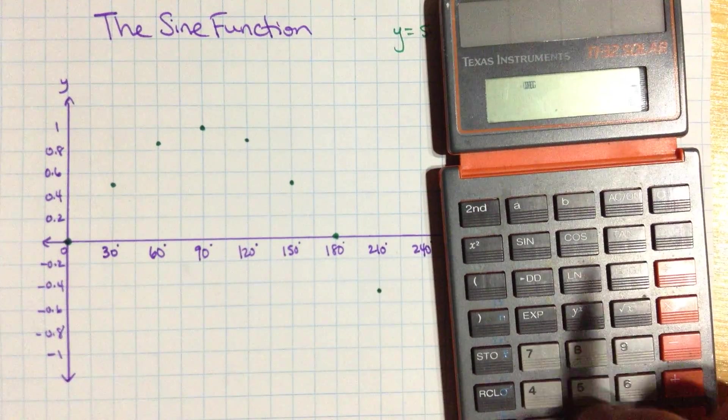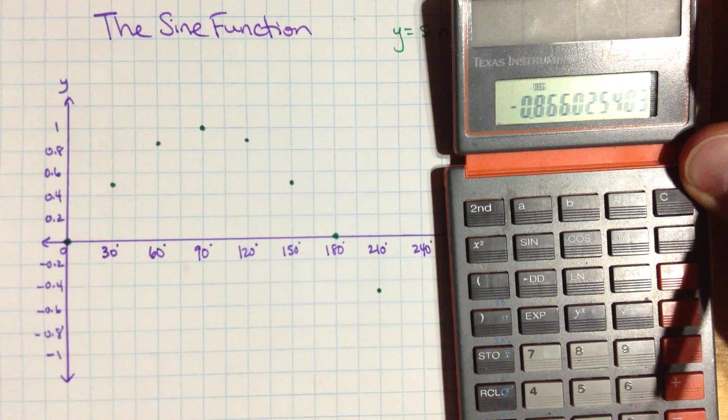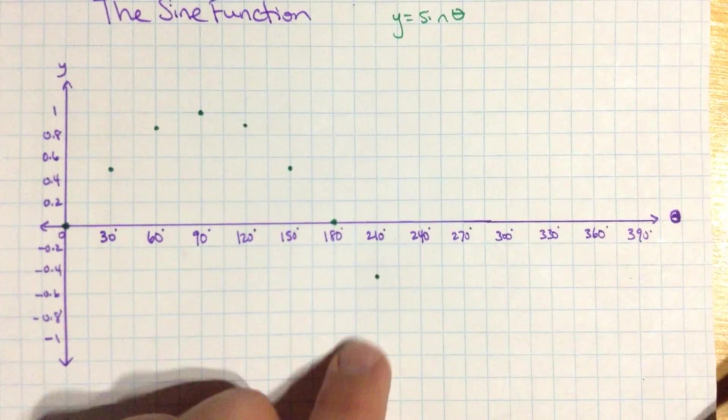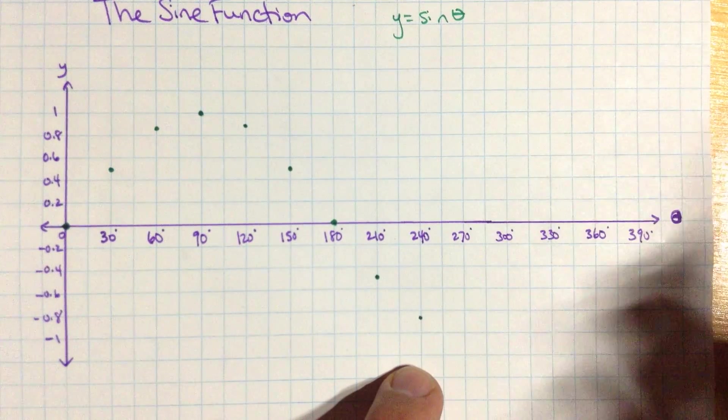Maybe you can see what's going to happen here. 240 sine, ah, negative 0.866. It's 240. Let's go down here like that.